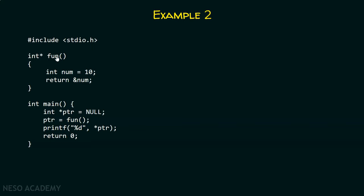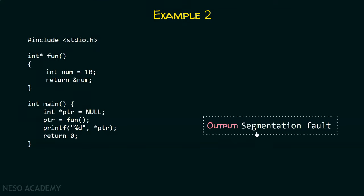You can understand that num is a variable which is local to this function. When this function finishes its execution, this variable gets vanished — this is the meaning of a local variable. This variable is local to this function; as long as this function exists, this variable exists. But after the execution of this function, the variable simply doesn't exist anymore. So it is just like de-allocating the memory automatically. When we try to return the address of this variable, we are returning the address of non-existing memory, and storing that address in PTR makes it a dangling pointer. Dereferencing it will cause a segmentation fault.